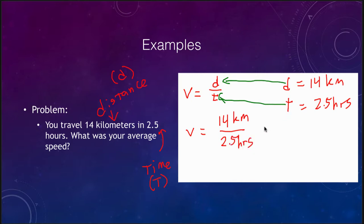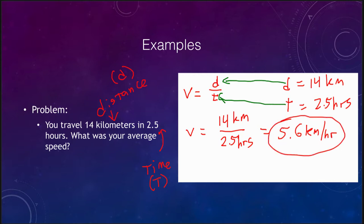Dividing 14 by 2.5 gives us 5.6 kilometers per hour for our velocity. Again, make sure you clearly mark your final answer. The steps are: write down what you know, write down your equation, substitute your known values into the equation, and then get your answer. Just writing '14 ÷ 2.5 = 5.6' without context means you are not properly showing your work — you need to show exactly what steps you went through, which demonstrates your understanding.